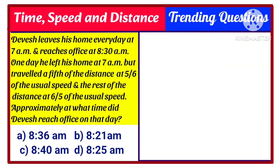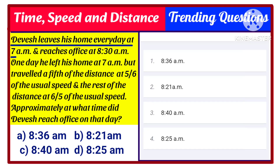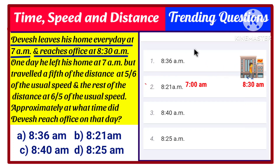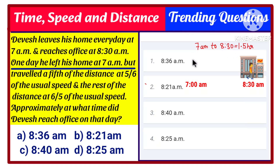Let's start with the question. Devis leaves his home every day at 7 AM and reaches the office at 8:30 AM. So Devis is a person who leaves his home at 7 AM and reaches the office at 8:30 AM — that means from 7 AM to 8:30 AM, he is taking a total of 1.5 hours, or 1 hour 30 minutes, to travel.